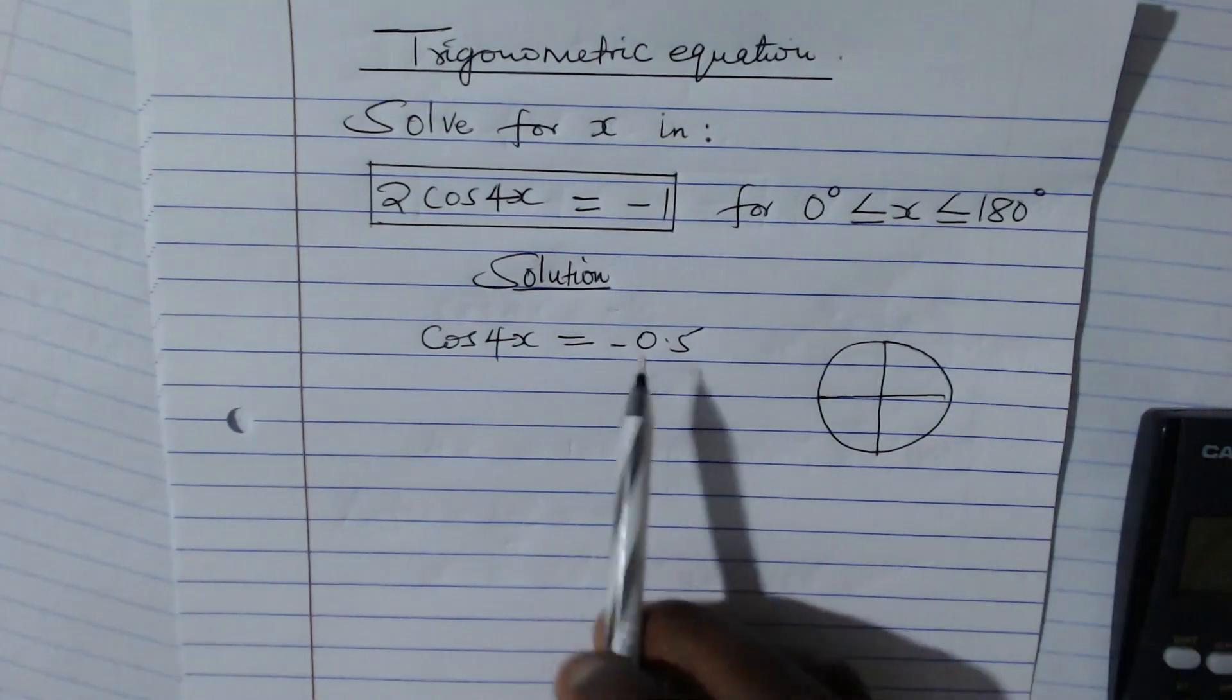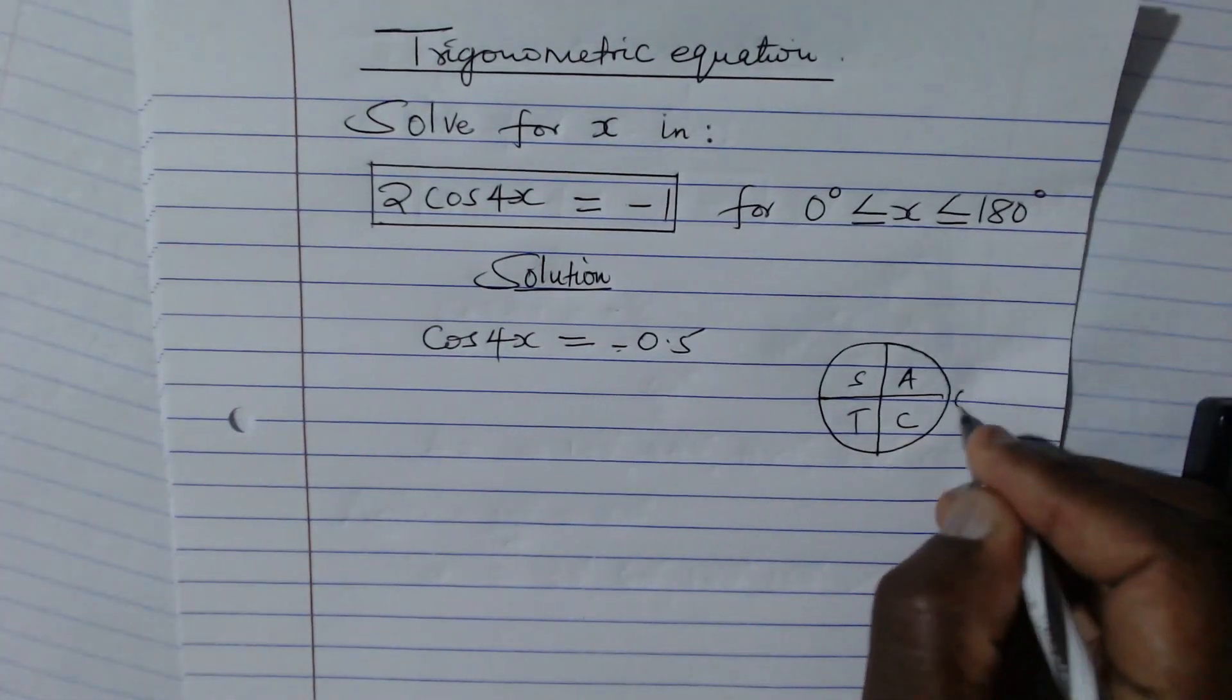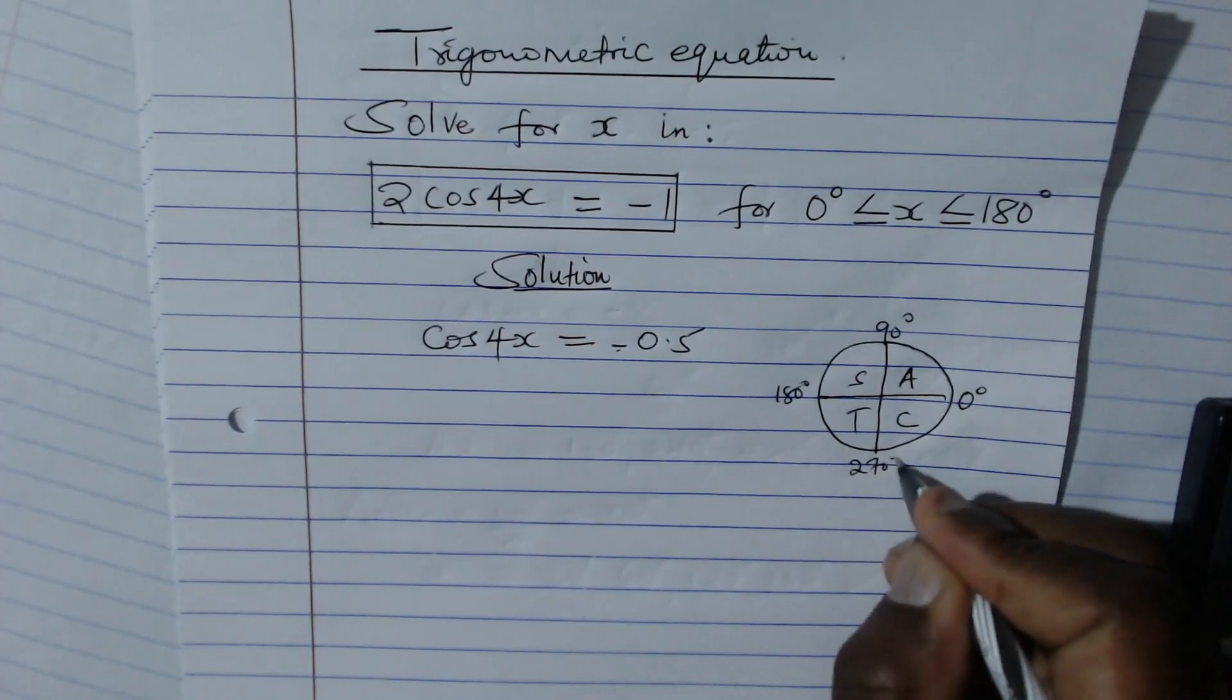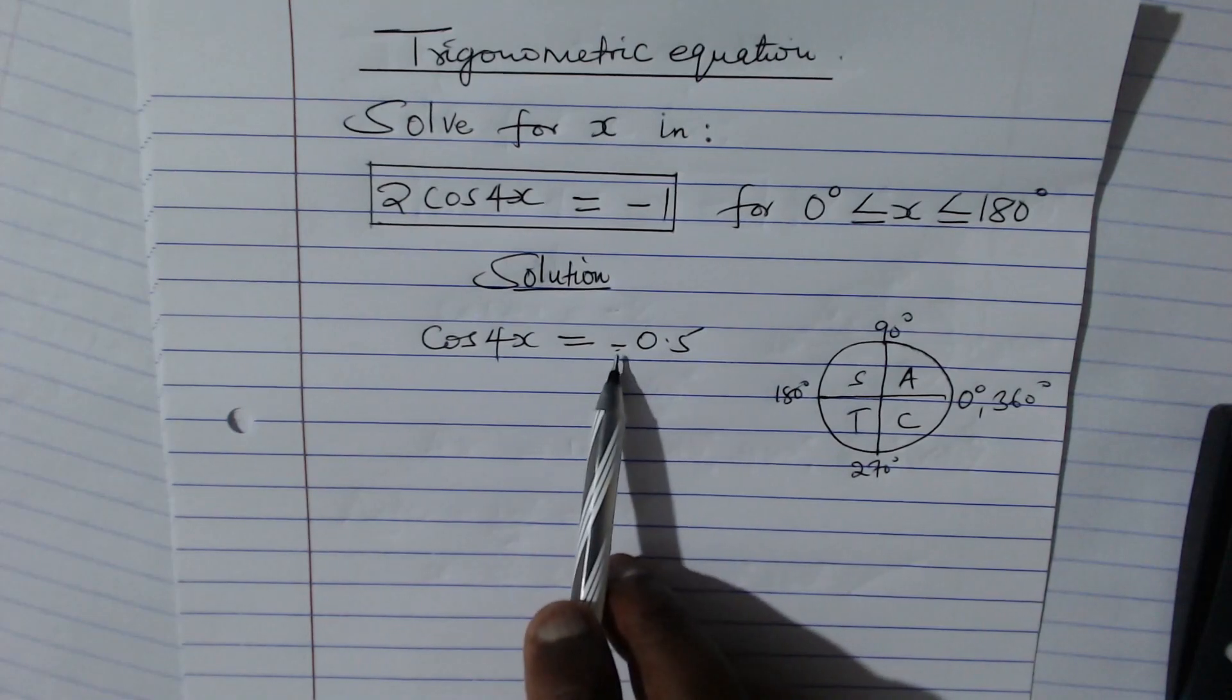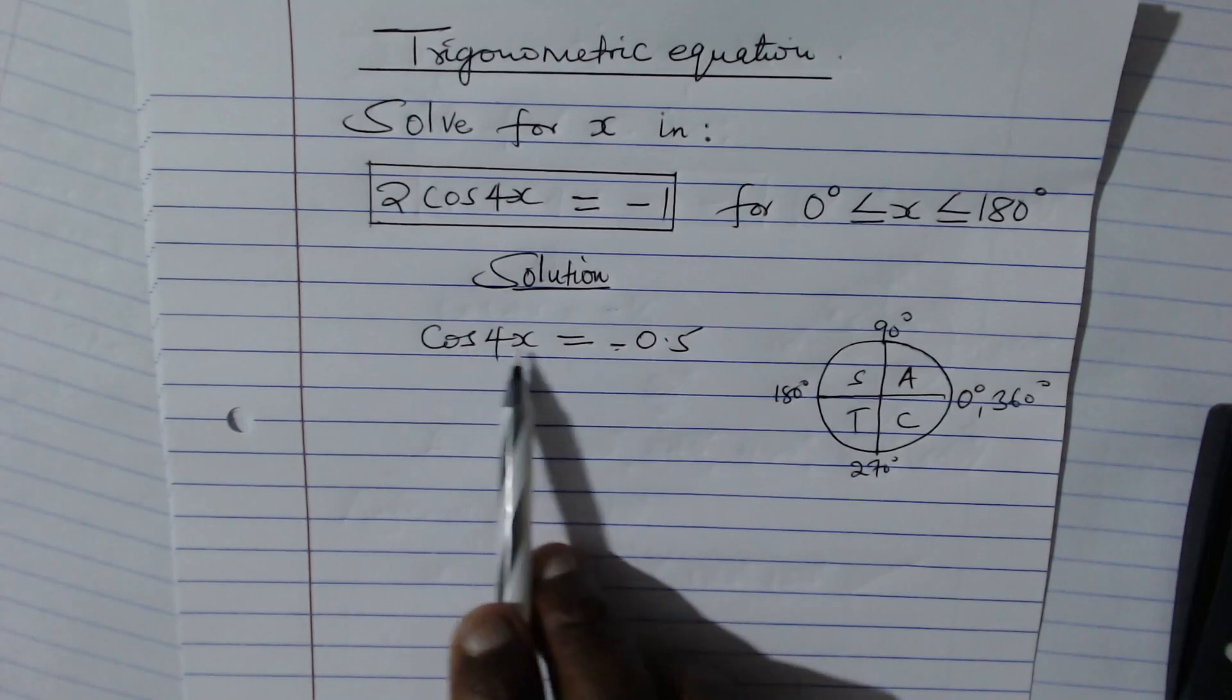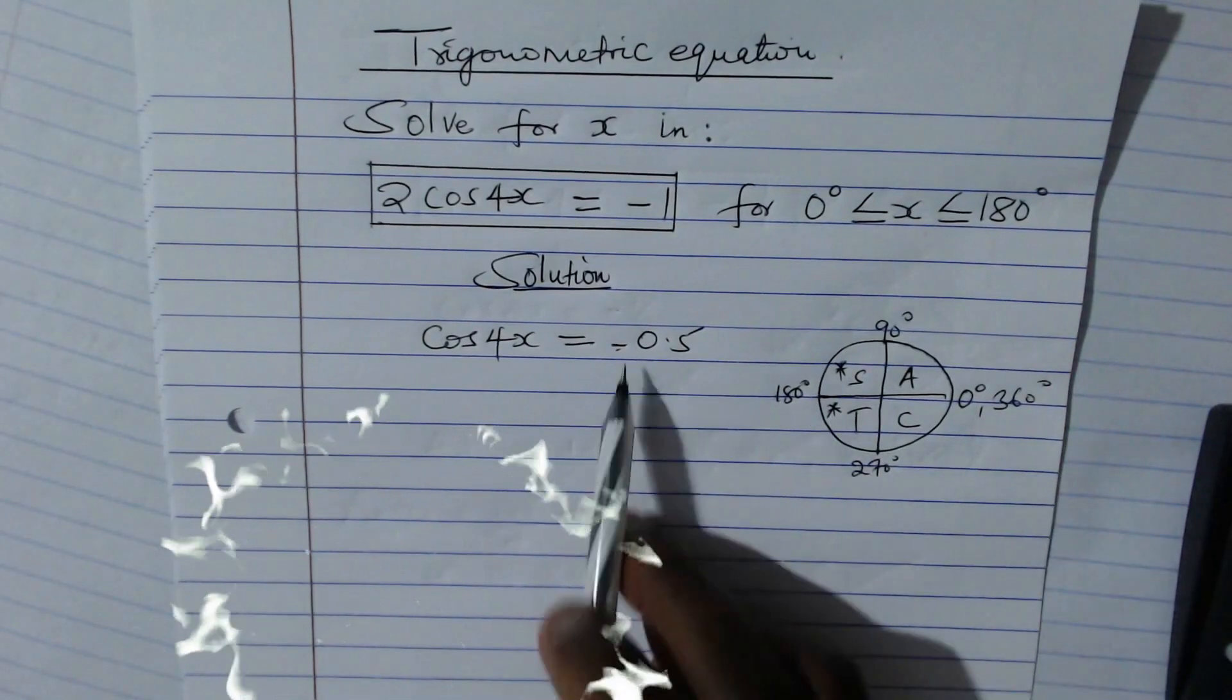So we have 0 degrees, we have 90 degrees, we have 180, 270, and finally 360. This negative implies that we're going to use it only to locate where do we find cosine being negative. It is in the second quadrant and in the third quadrant. That is the meaning of that negative.